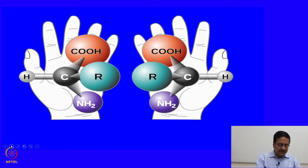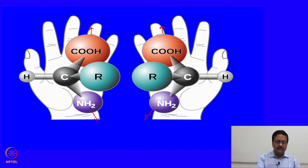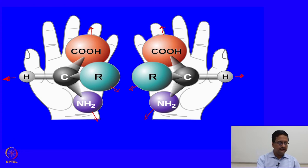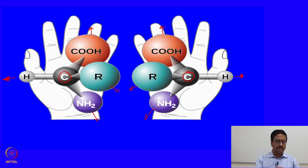In this particular example, the carboxylic acid group is up in both cases, the NH2 group is down in both cases, and the R group is pointing towards us in both cases, but the hydrogen is pointing left in one molecule and right in the other. This means these two molecules are different — the arrangement of atoms about the central carbon differs, and this difference in orientation of bonds makes these two molecules completely different with different physical properties.